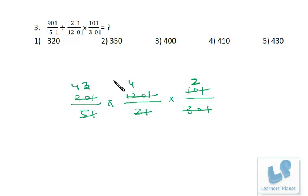Now this is 8 into 43. So 8 threes are 24, and 8 fours are 32 plus 2 is 34, so it's around 344. But the option closest to this is 350 only, so 350 will be the correct choice.